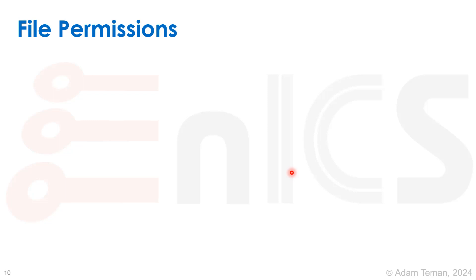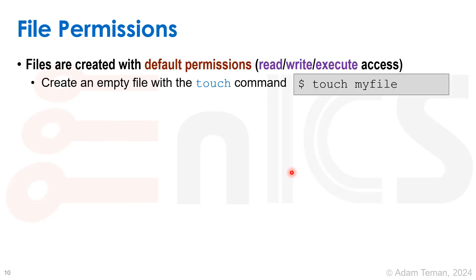Now we know how to go through different directories and list what's in them, but there is something we must know at this point: file permissions. When we create files, they have default permissions — who can access them and how. Can they read the file, write to it, or maybe it's read-only? And can they execute it, run code? Those are the three options: read, write, and execute access.